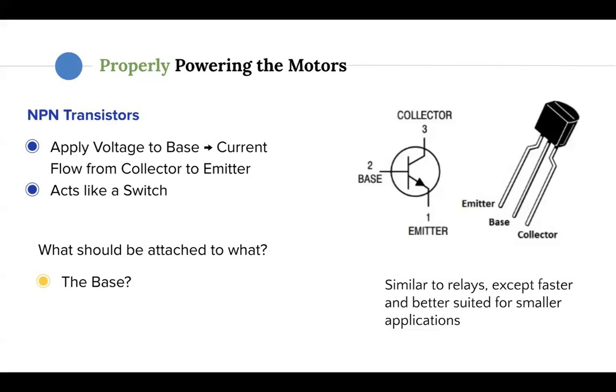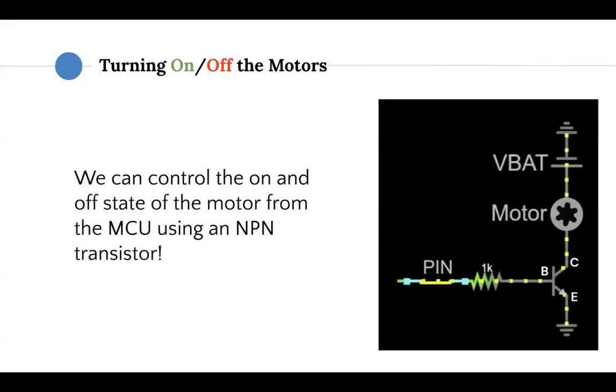So what should be attached to what? The microcontroller pin output should be attached to the base because that determines when the motor should be turned on or off. And what should be passed into the collector emitter? Well, the battery, motor, and ground. Here again is a diagram of the circuit working. When the pin is feeding a high voltage to the base, current is allowed to flow from the collector to the emitter, turning on the motor. And when the pin is passing in low to the base, then the current is not allowed to flow from the collector to the emitter, preventing the motor from running.